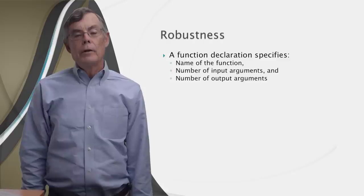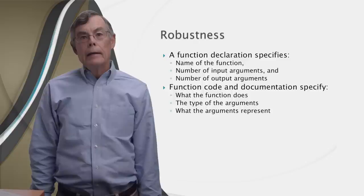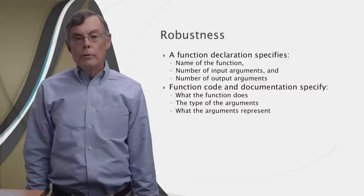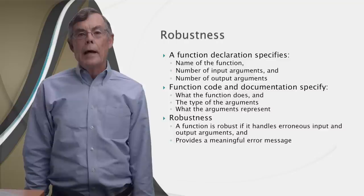First, let's note a limitation of the function declaration. A function declaration specifies the name and the number of input and output arguments, but in our head and in our code, we make additional assumptions about our function that aren't specified in the declaration, and we write the code and the documentation for the function which specifies the rest, what the function does, what types of values should be in the input arguments, and what those values represent.